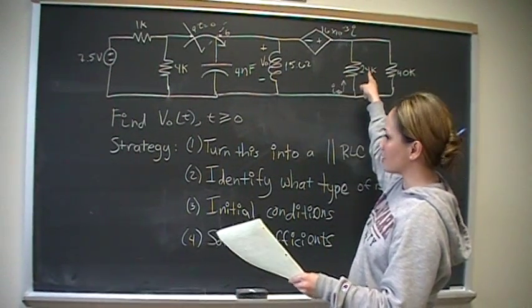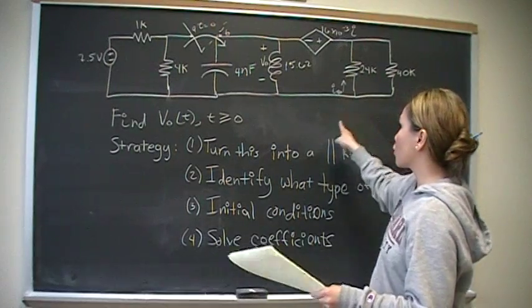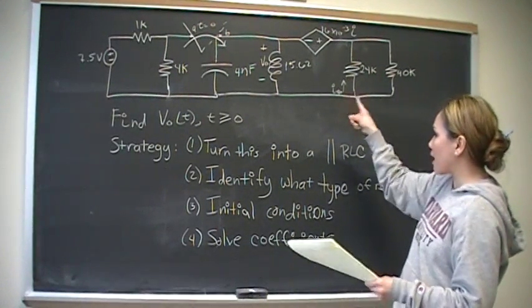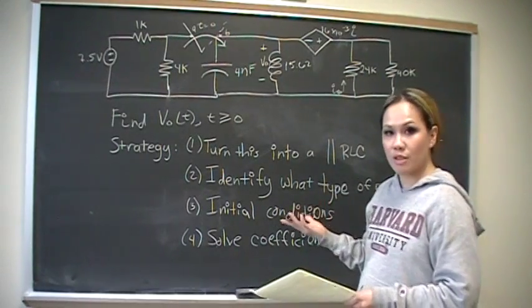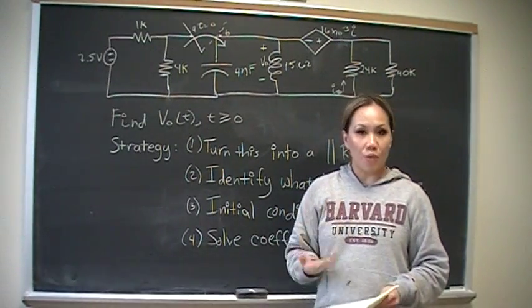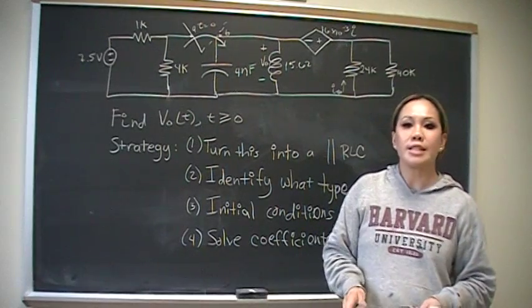we're going to turn this into a parallel RLC circuit by converting this branch here into a resistor, its equivalent resistance. The second thing, strategy, to solving this is after we have done that, then we need to identify what type of response this will be. Will it be over-damped, under-damped, or critically damped?